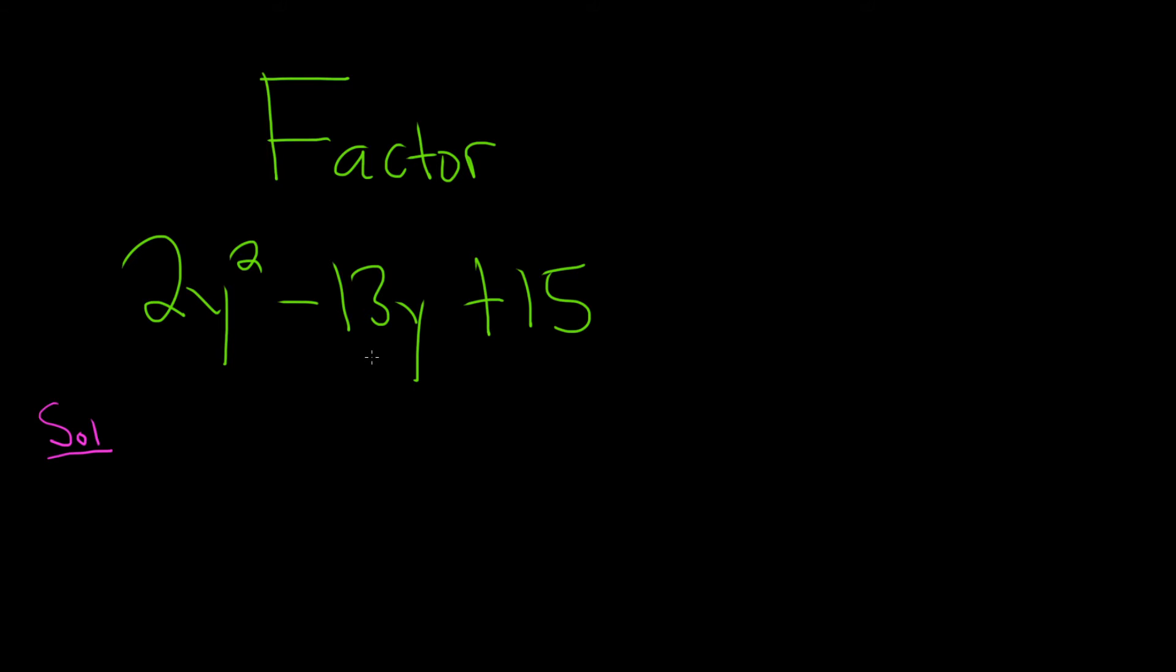So the AC method basically says you first take this number here and this number here. By the way, this is your A and this is your C. That's why it's called the AC method. So 2 times 15 is 30, so you multiply.